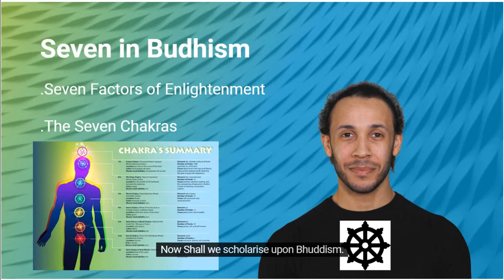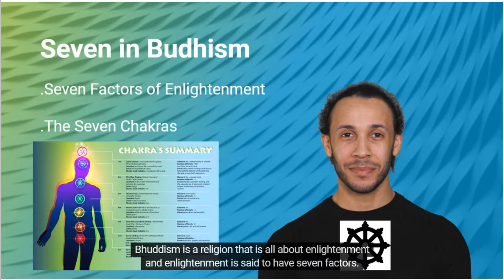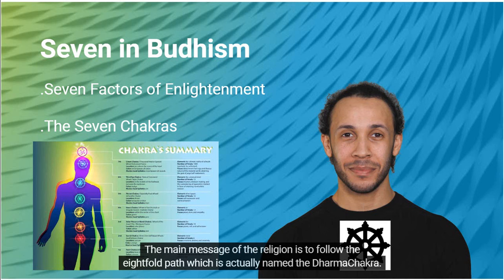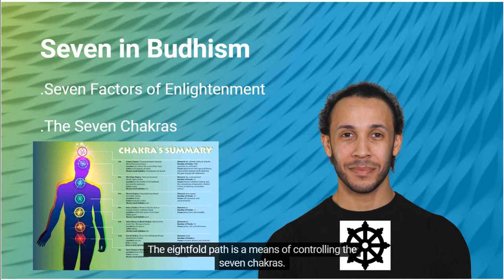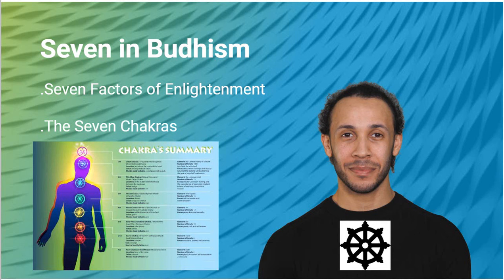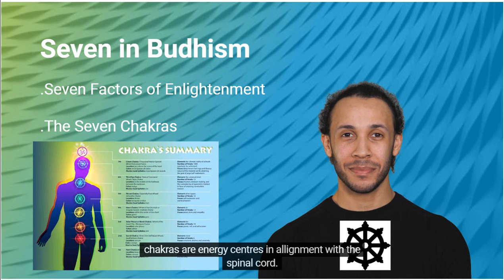Shall we now look at Buddhism? Buddhism is a religion all about enlightenment, and enlightenment is said to have seven factors. The main message of the religion is to follow the eightfold path, which is also named the Dharma chakra. The eightfold path is a means of controlling the seven chakras — energy centers in alignment with the spinal cord. Good old seven is of special importance once again in this life way.